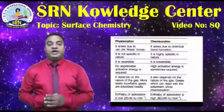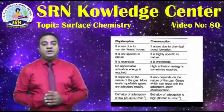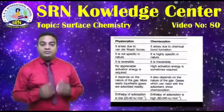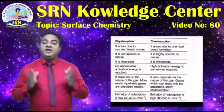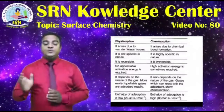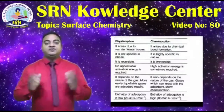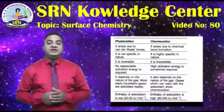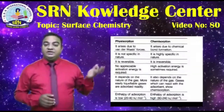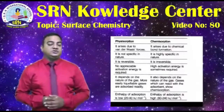Let us now compare the different types of adsorption, that is physisorption and chemisorption. In physisorption, a low heat of adsorption usually in the range of 20 to 40 kJ per mole is required, but in chemisorption a very high heat of about 50 to 400 kJ per mole is required. Physisorption is a reversible process, but chemisorption is irreversible in nature. In physisorption, an increase in temperature results in a slowdown of the reaction, but in chemisorption, adsorption initially increases with increase in temperature, and later when temperature is further increased, the chemisorption process also decreases.